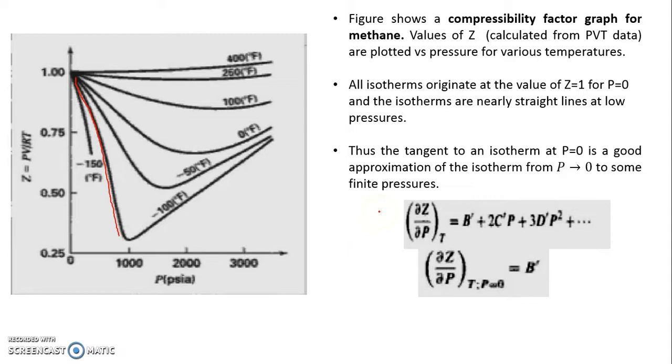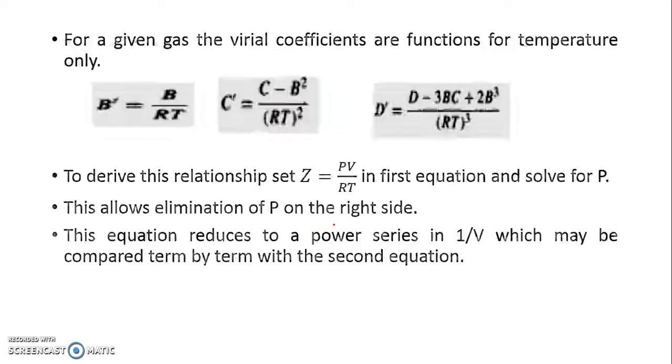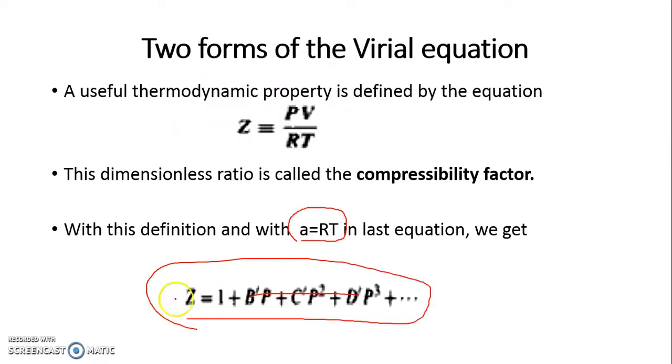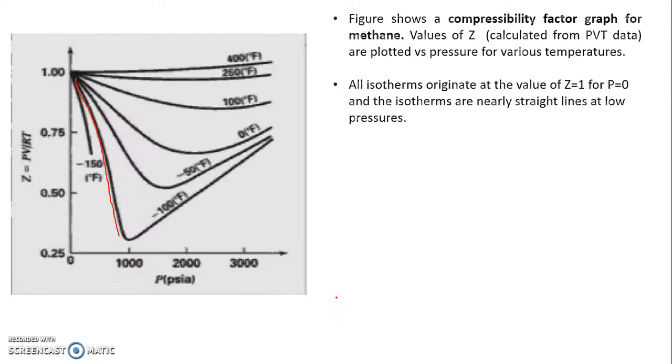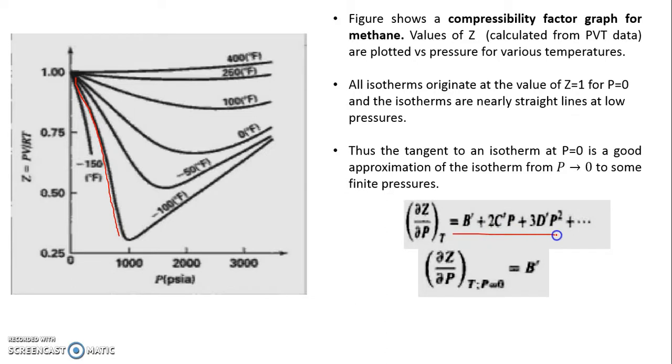How do you do it? If I differentiate z with respect to p at constant temperature, the expression I'm talking about is this. When I differentiate this with respect to p at constant temperature, I get b dash plus 2c dash p plus 3d dash p square and likewise. If I say that this is to be done tangentially at p tends to zero, all the terms containing p would vanish and what we have is this.